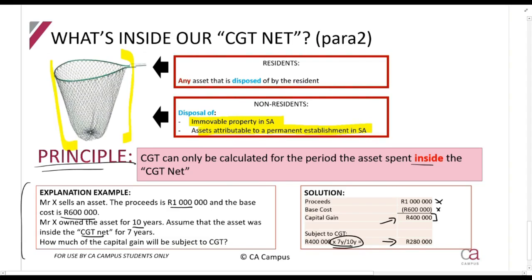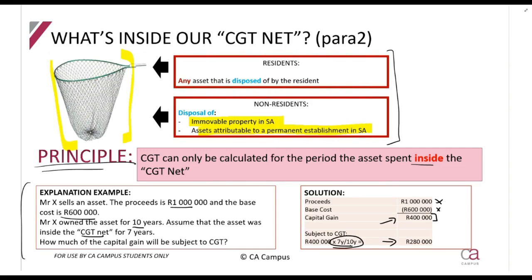We're going to refer to in and out of the CGT net quite often. If something is in the CGT net, it means it's subject to CGT. Certain assets like trading stock will be subject to gross income with no CGT implications - we consider those as not being in the CGT net. Some assets are not subject to CGT at all, like personal use assets - we consider those as not being in the CGT net either, because they're simply not subject to CGT.